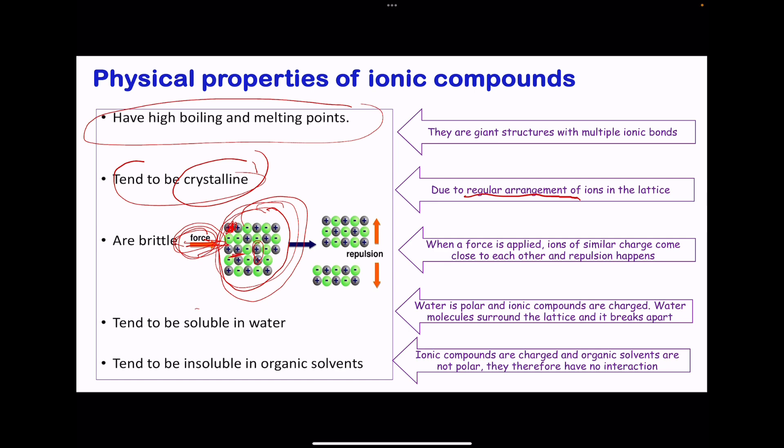Ionic compounds tend to be soluble in water. This is because water is polar while ionic compounds tend to be charged. There is going to be an attraction between water molecules and the ions within the ionic compound, and the structure is going to be broken away to make the ion soluble in water. Ionic compounds tend to be insoluble in organic solvents because ionic compounds are charged while organic solvents are not polar, so there will be no attraction between the two.